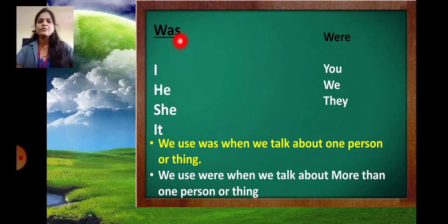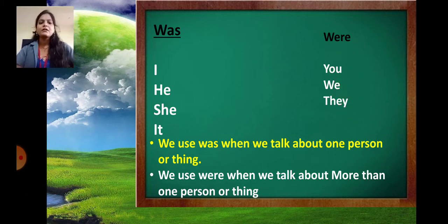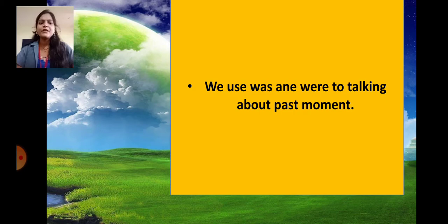With I, he, she and it we use was. With you, we and they we use were. We use was when we talk about one person or thing. We use were when we talk about more than one person or thing. We use was and were when we talk about past moments.